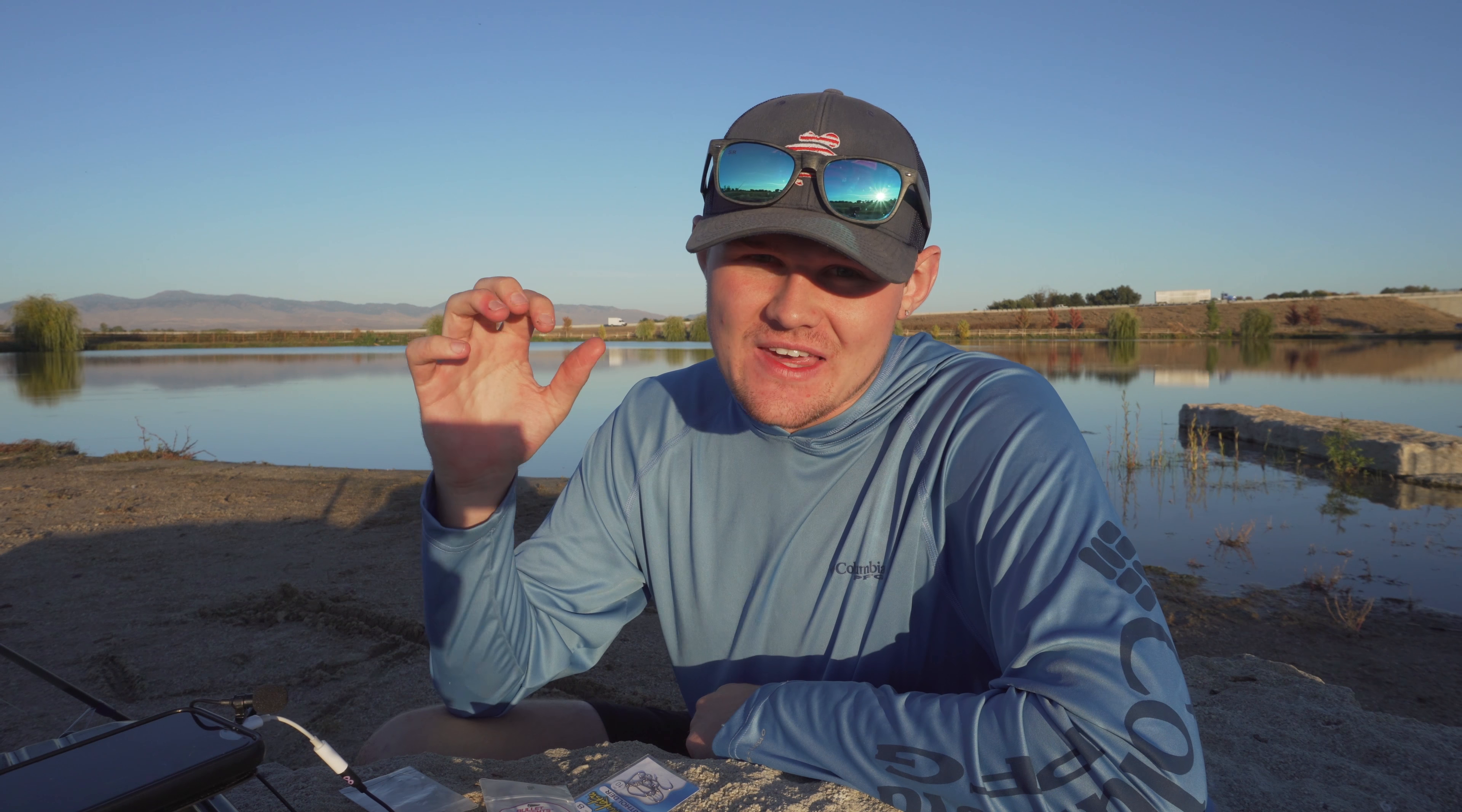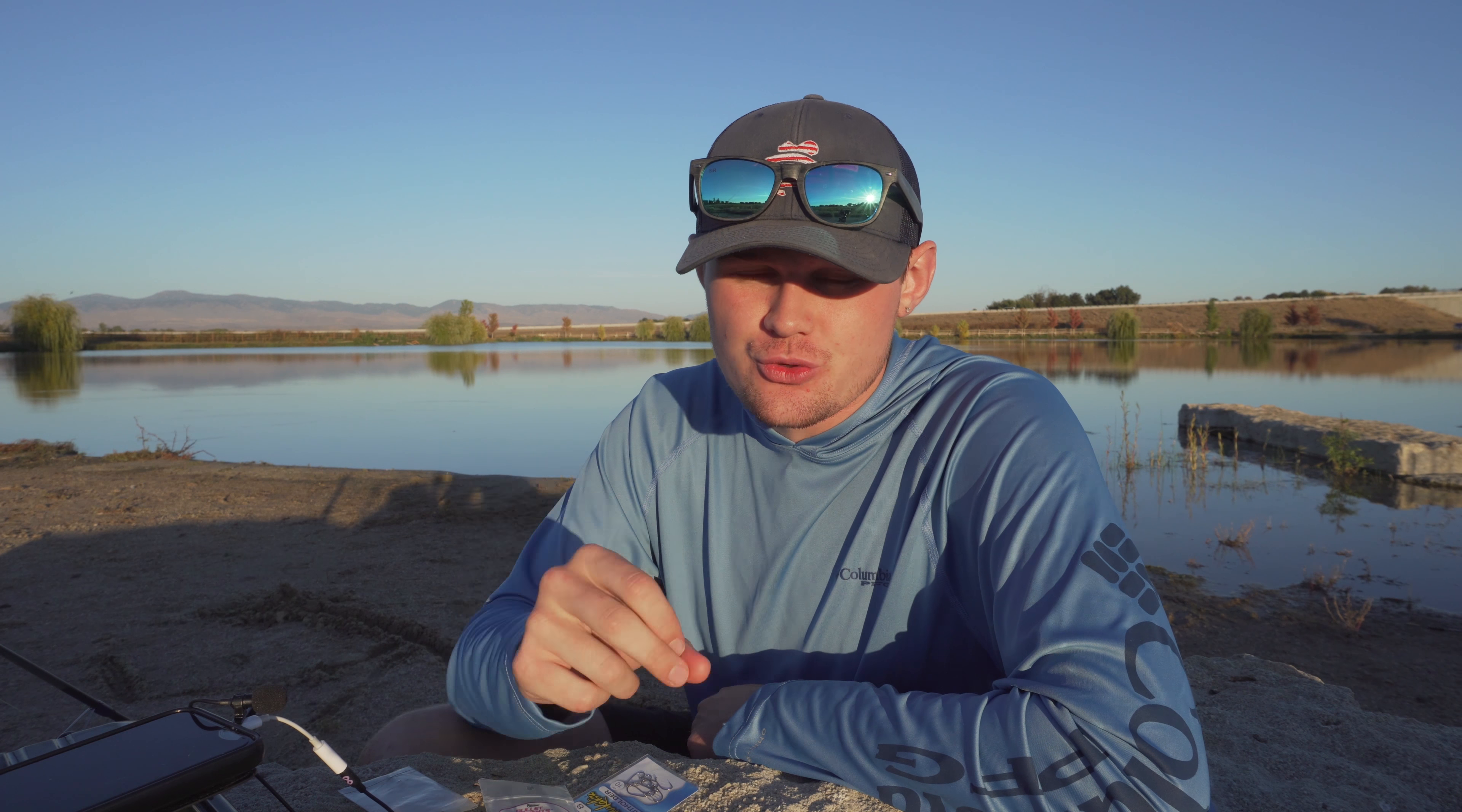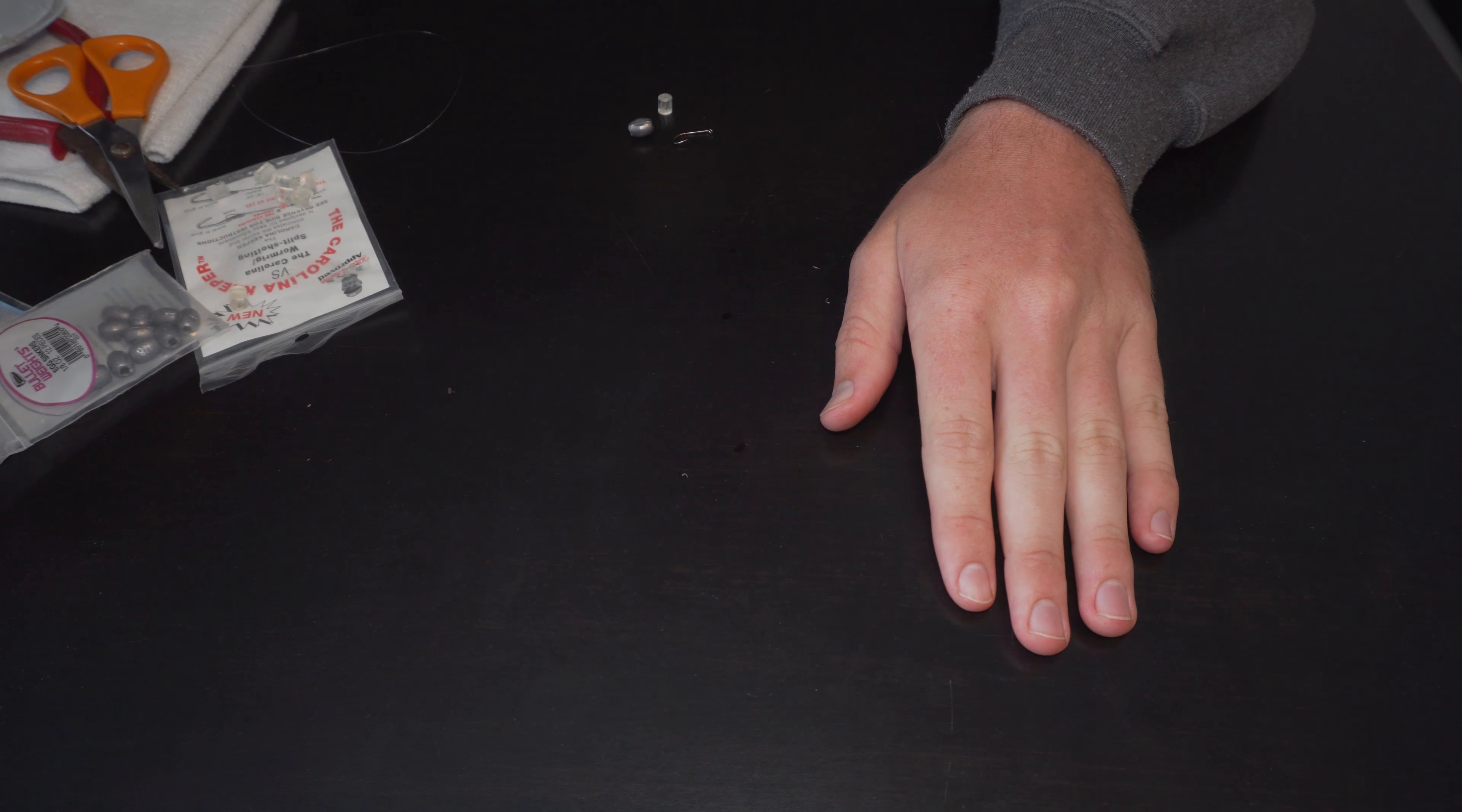If there is one rig that I have seen tied more incorrectly than any other rig, it has got to be the Carolina rig for trout. Whether that's using power bait or worms or a little fly or a mice tail, whatever it is, this rig gets messed up a lot. And I don't see many people tie it the true, correct, the simplest and the best way. So today I'm going to show you guys what you may have been doing wrong this whole time and what you can do to tie the best version.